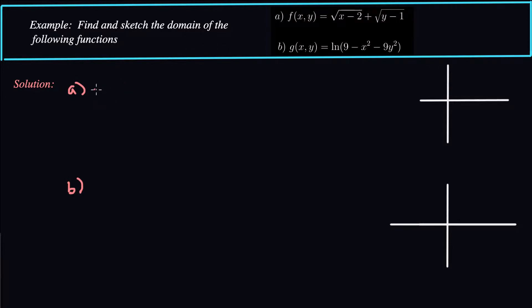So we have to have x minus 2 greater than or equal to zero. And we have to have y minus 1 greater or equal to zero as well.